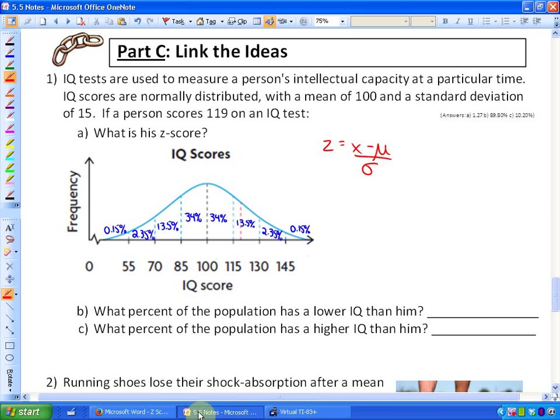Okay, we're going to get practical finally. This first example is quite guided, next examples are a little bit more difficult. The first question says IQ tests are used to measure a person's intellectual capacity at a particular time. IQ scores are normally distributed, so they follow this symmetrical bell curve where most people are close to the mean, with a mean of 100 and a standard deviation of 15. You'll see here that I've labeled the normal distribution already with the mean of 100 and standard deviation of 15.